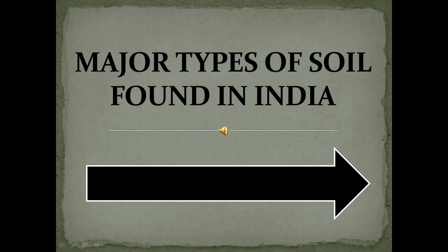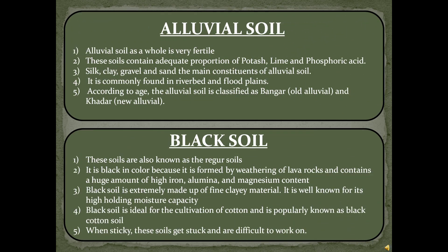Some major types of soil found in India are alluvial soil, black soil, laterite soil, and forest or mountainous soil. Alluvial soil as a whole is very fertile. These soils contain adequate proportions of potash, lime, and phosphoric acid. Silt, clay, gravel, and sand are the main constituents of alluvial soil. It is commonly found in riverbeds and floodplains. According to age, alluvial soil is classified as Bangar and Khadar.